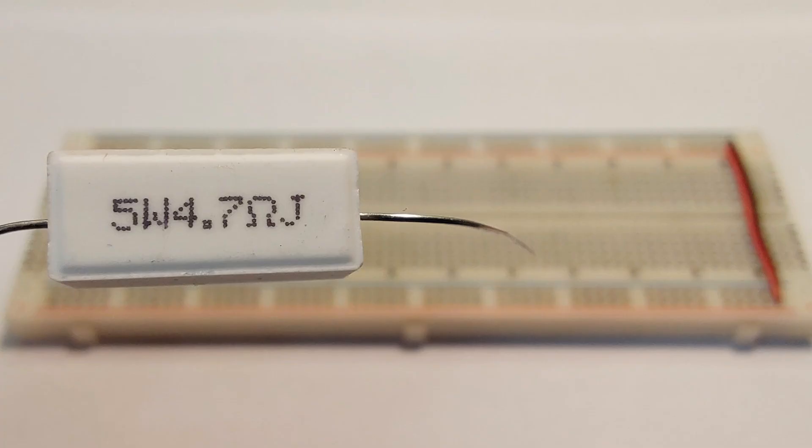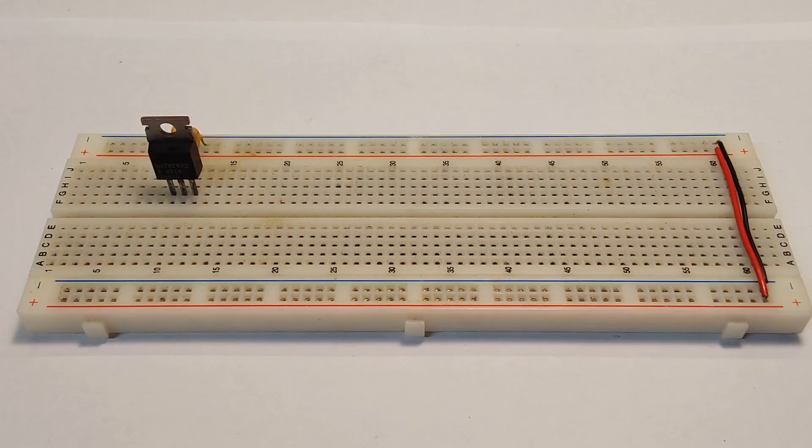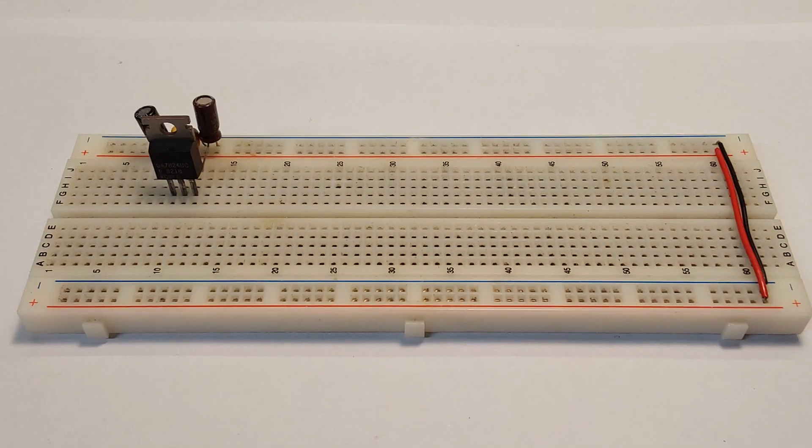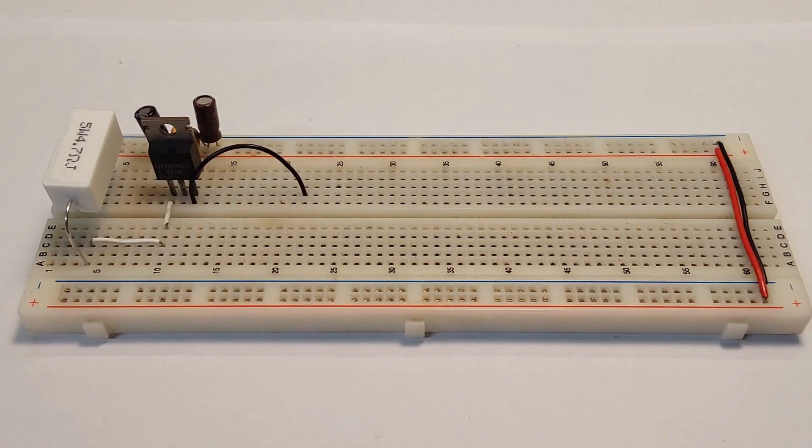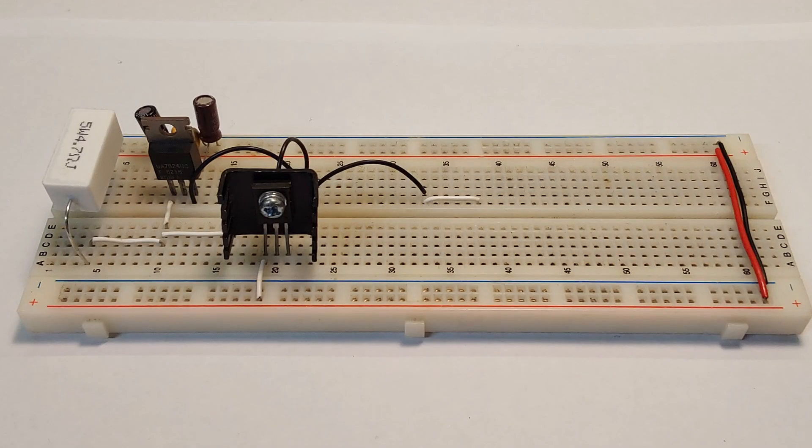And finally, our resistor. Don't forget the usual filtering capacitors on the input and output terminals of the regulator, and let's finally add our transistor. We now need a way to test our circuit.